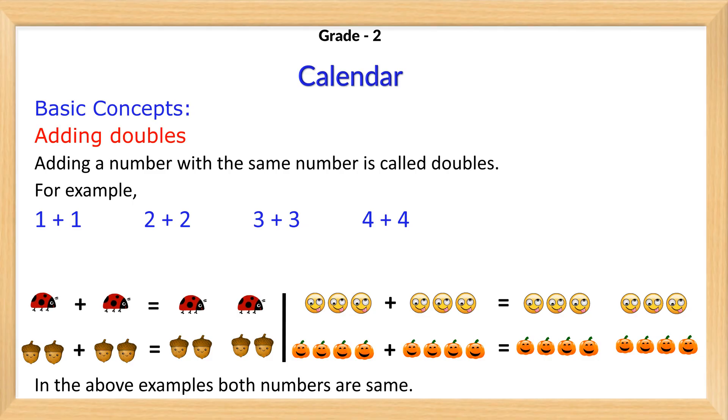Adding doubles. Adding a number with the same number is called doubles. For example, 1 plus 1, 2 plus 2, 3 plus 3, 4 plus 4. In the above examples, both numbers are the same.